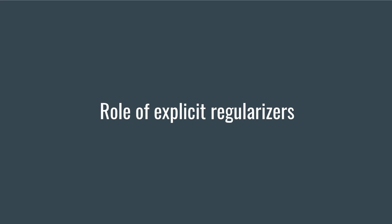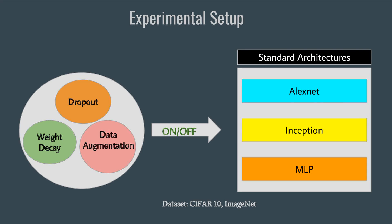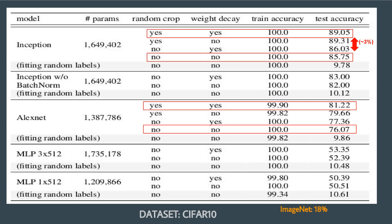They tried to decode the role of explicit regularizers in deep learning by running tests on AlexNet, Inception, and MLP architectures with CIFAR-10 and ImageNet datasets, turning explicit regularization on and off. Surprisingly, with all of the regularizers turned off, the experiment results for CIFAR-10 and ImageNet showed very little difference.